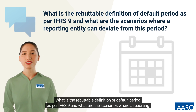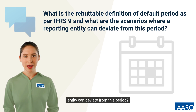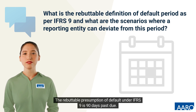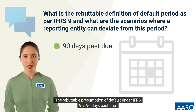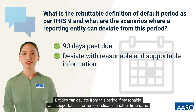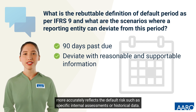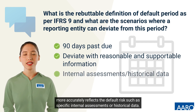What is the rebuttable definition of default period as per IFRS 9, and what are the scenarios where a reporting entity can deviate from this period? The rebuttable presumption of default under IFRS 9 is 90 days past due. Entities can deviate from this period if reasonable and supportable information indicates another time frame more accurately reflects the default risk, such as specific internal assessments or historical data.